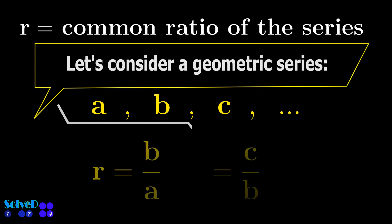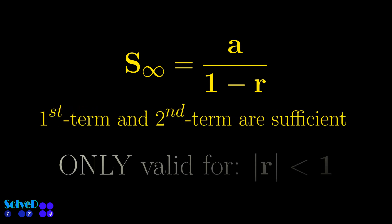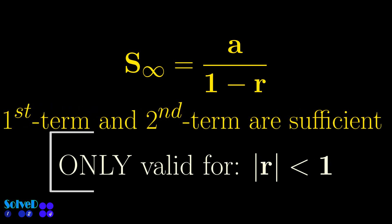Consider a general series. Common ratio is obtained by dividing the second term by the first one. This means that for the sum to infinity, at least first two terms of the series are required and are sufficient.